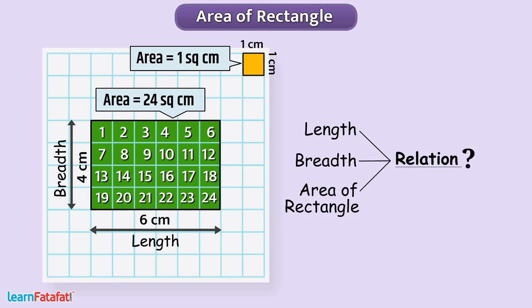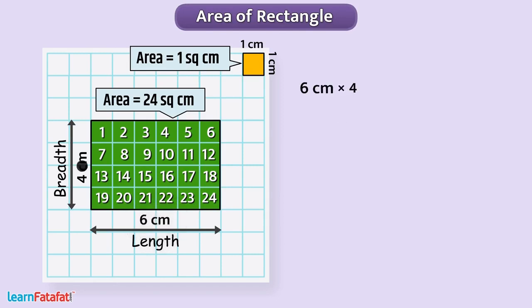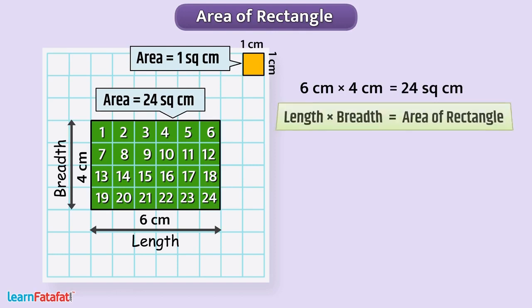You must have observed that, if we multiply the length and breadth, then the result is area of rectangle. This understanding gives us a formula to calculate the area of the rectangle. We can write it as, area of rectangle is equal to length multiplied by breadth.